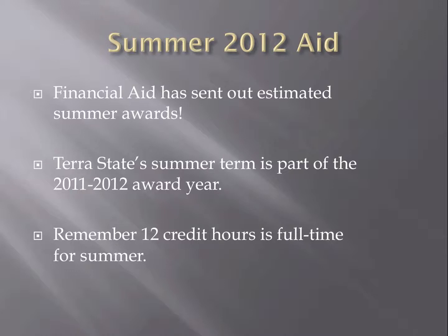For students new to the summer term, note that summer is part of the 2011-2012 award year. When completing your FAFSA, make sure the right tab — 11 and 12 — is selected, since the default for the Department of Education will now be the 12-13 tab. Also, for summer, full time is considered 12 credit hours, the same as fall and spring.